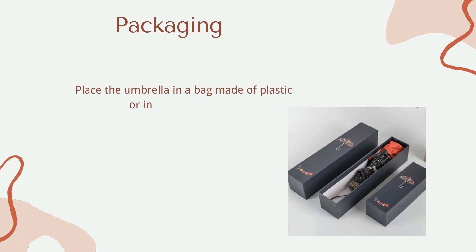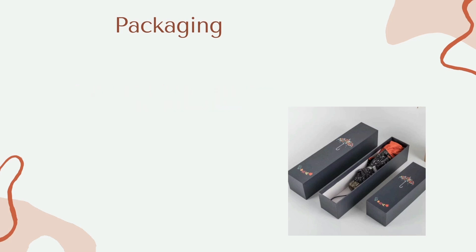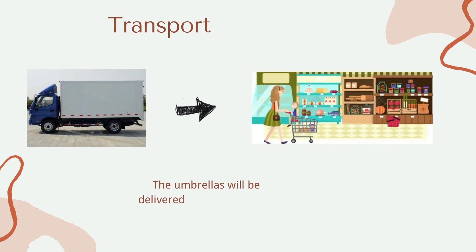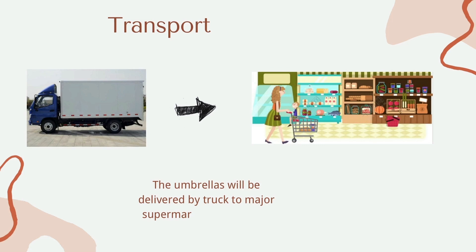For packaging, most of the market is packed in plastic and a few in boxes made of paper. For transport, the umbrellas are delivered to major supermarkets and retailers in large vans.